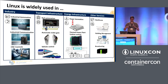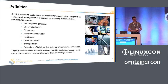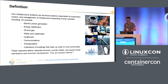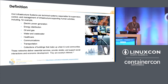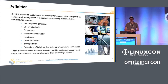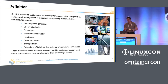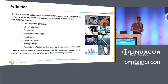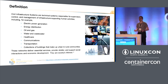We are talking about domains we are clustering together as civil infrastructure systems. These are technical systems responsible for the supervision, control, and management of infrastructure supporting human activities, including all the domains I mentioned. These networks provide essential services — shelter, support for social interaction, economic development. They are society's lifeline. We all depend on them more than we probably realize, because they just work. And they are running Linux.